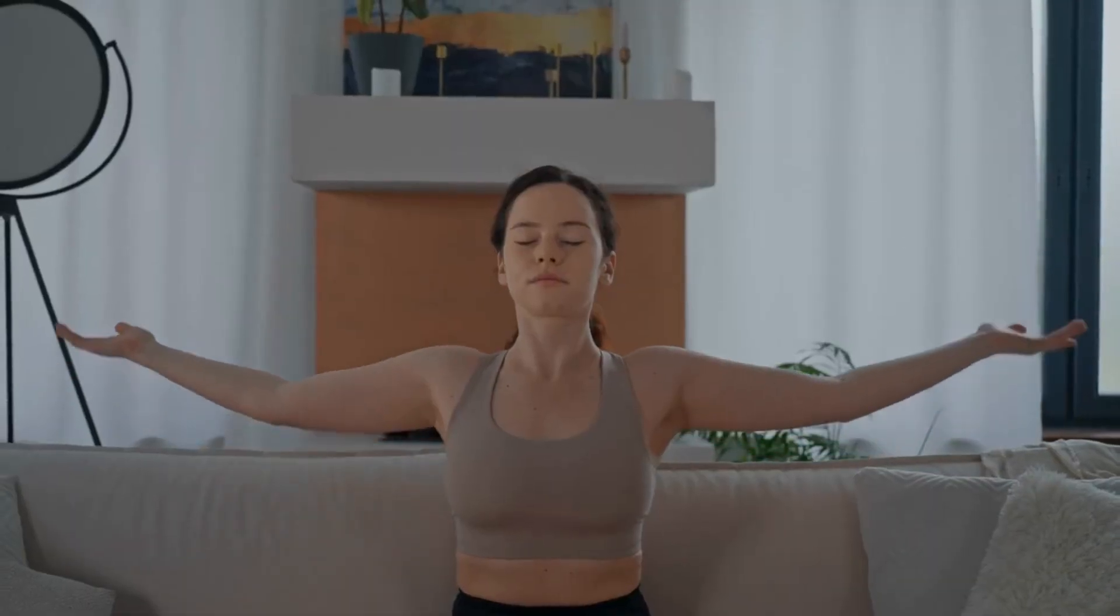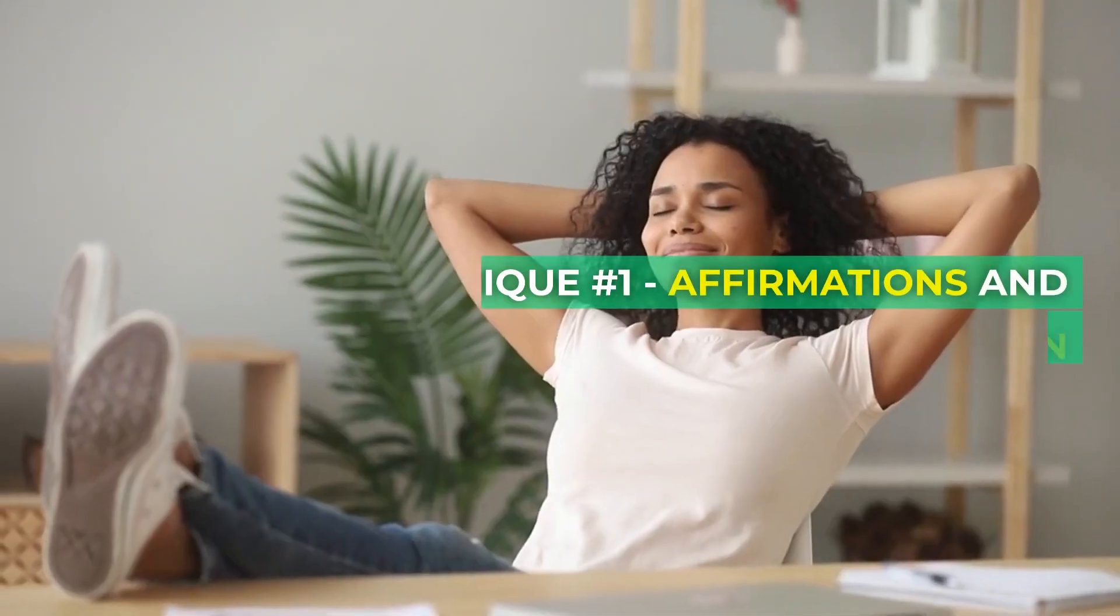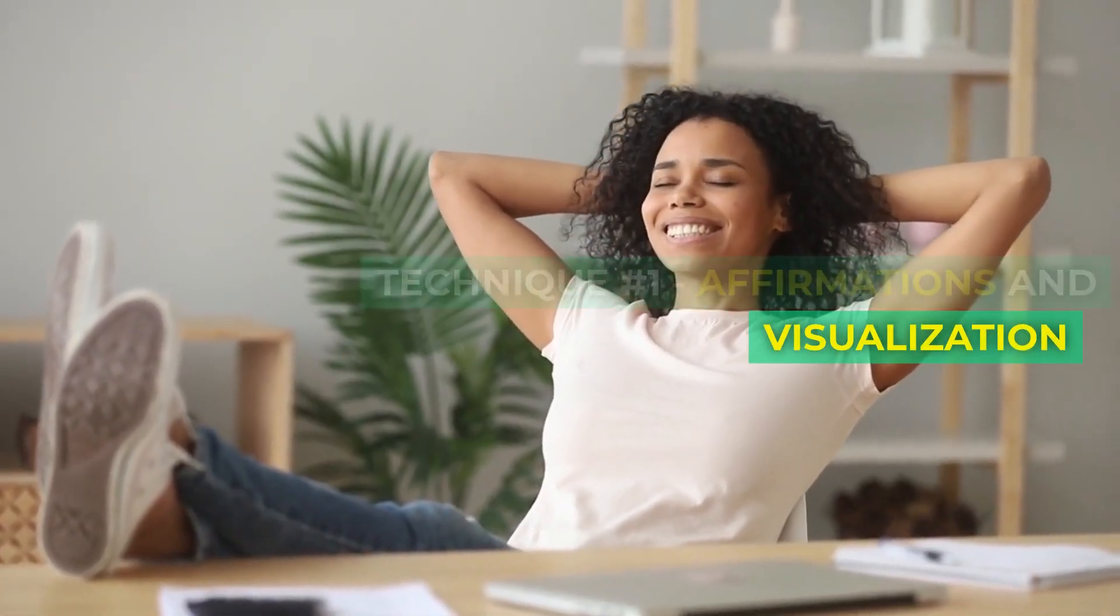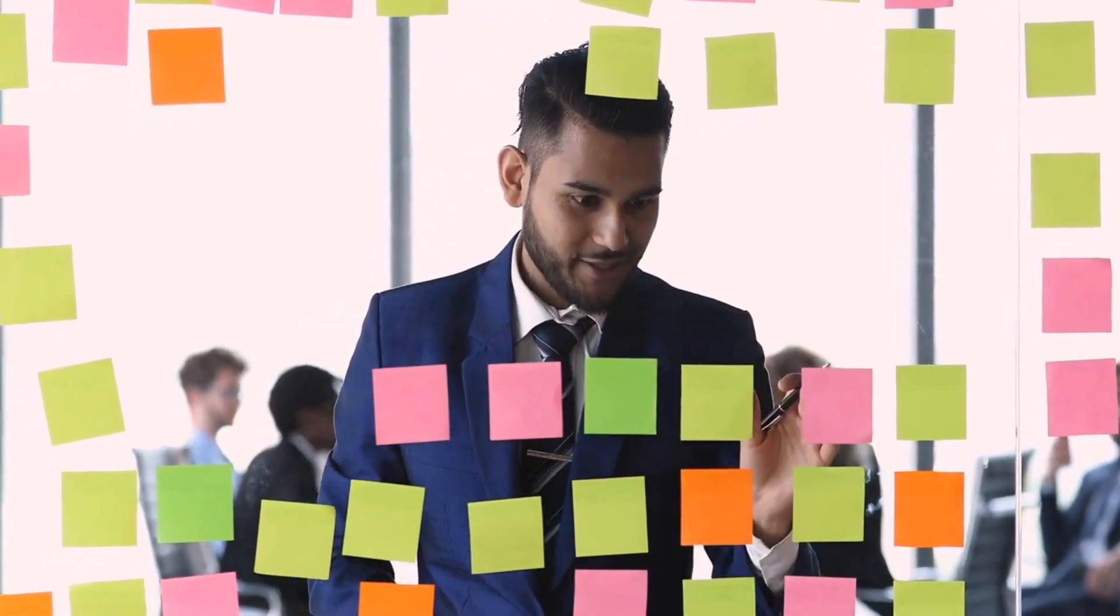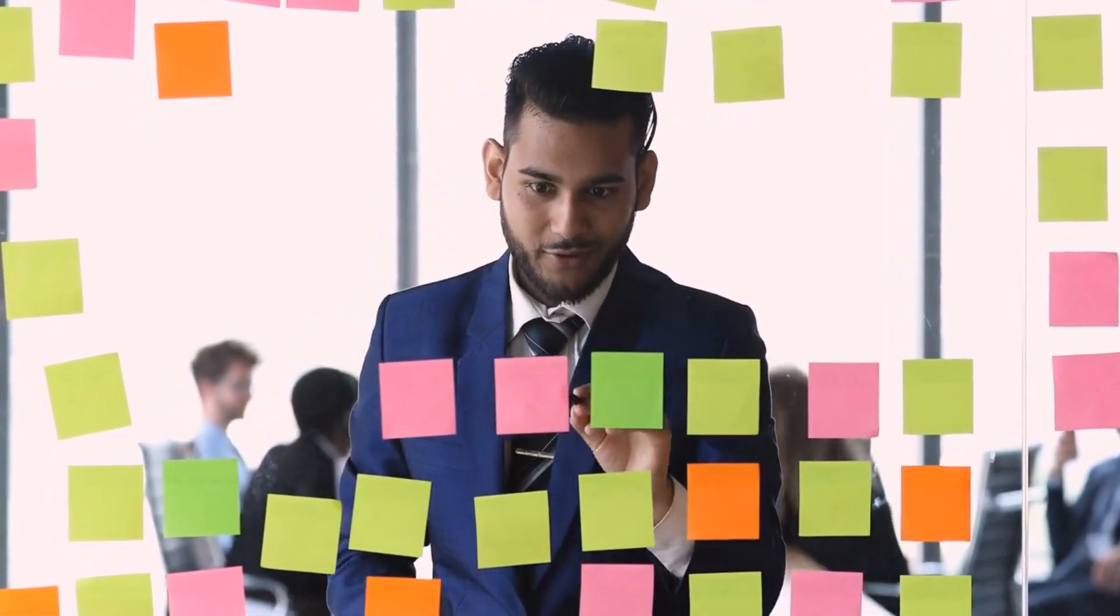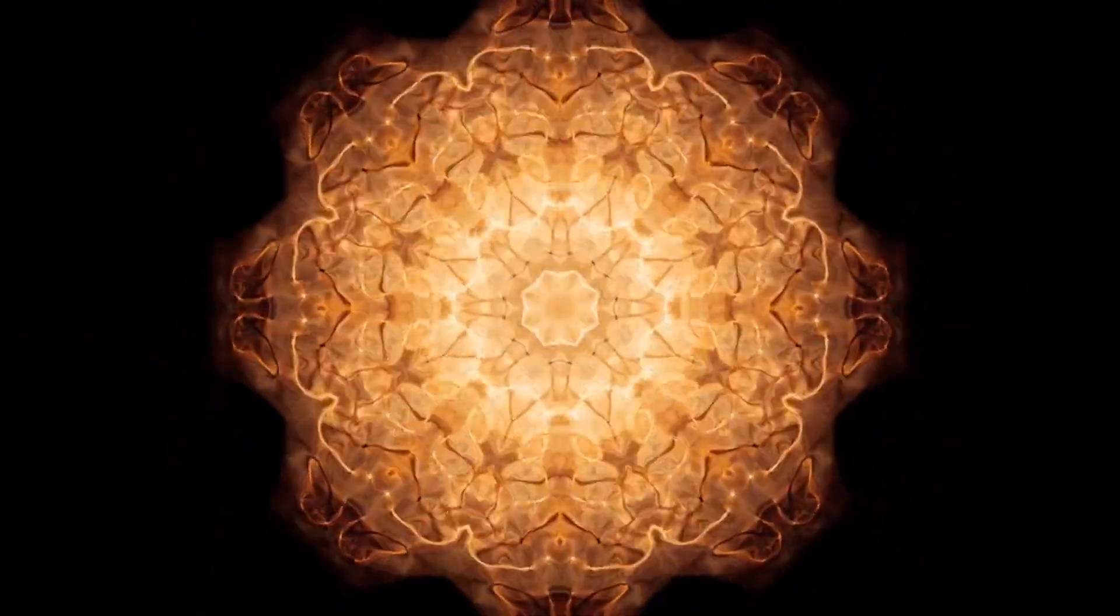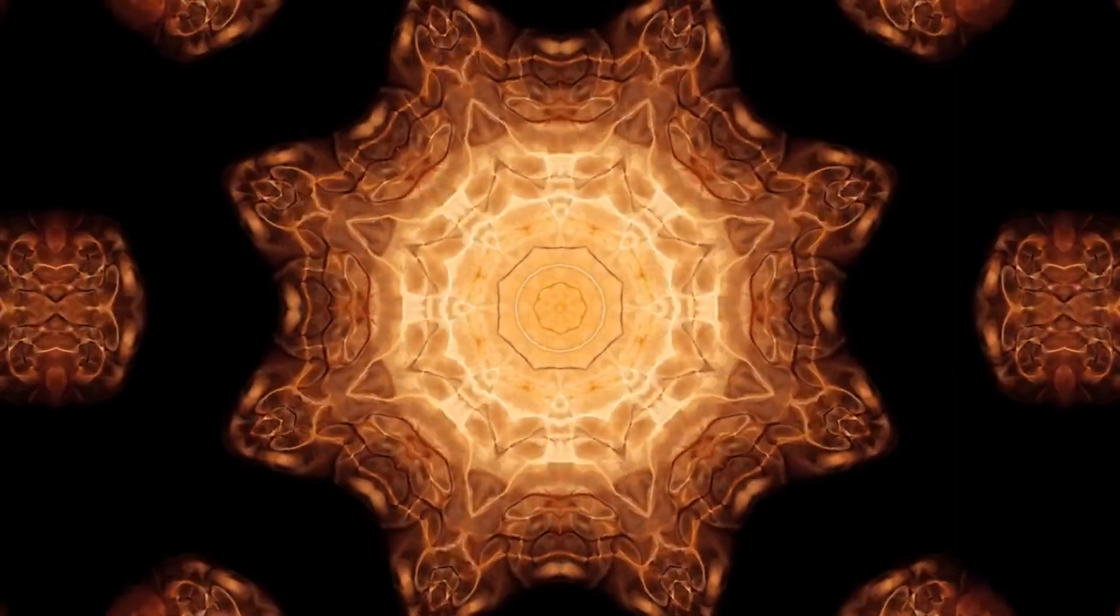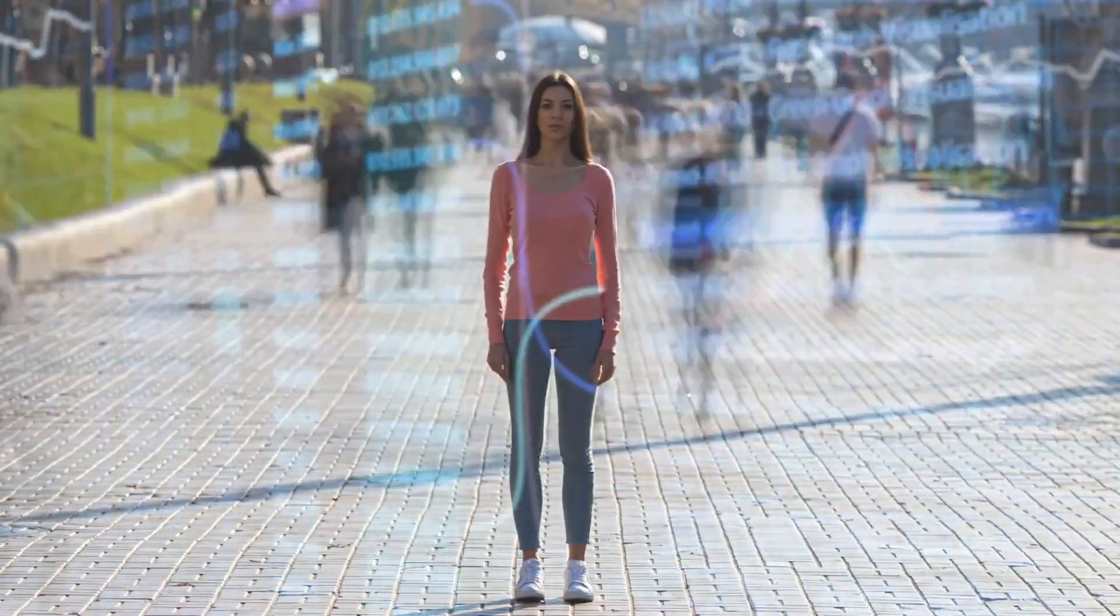Let us dive into the top three techniques to harness the subconscious power. Technique number one: affirmations and visualization. One of the most effective ways to reprogram your subconscious mind is through affirmations and visualization. By repeating positive statements and imagining your desired outcomes, you're sending powerful messages to your subconscious. It starts believing in your dreams, making them a reality.